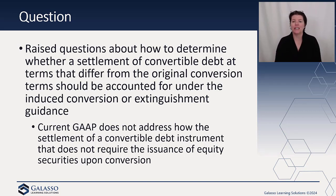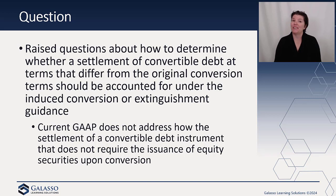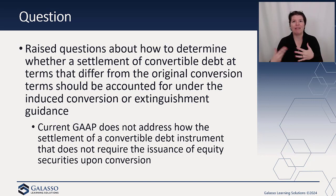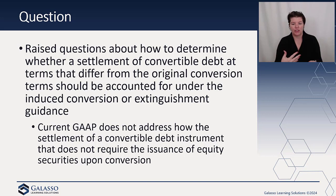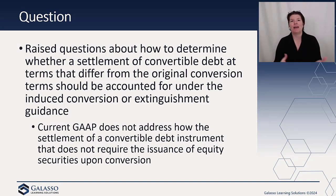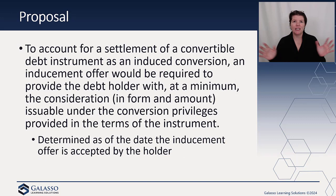Current GAAP also does not address how the settlement of a convertible debt instrument that does not require the issuance of equity securities upon conversion should be handled. When they originally wrote this guidance, it was not as popular to have a cash option as it was to convert into shares. The timing has changed - we've seen a shift in the prevalence of these other types of conversion features.